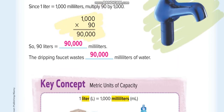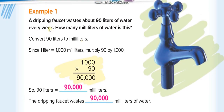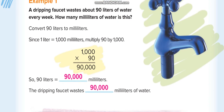First example: a dripping faucet wastes about 90 liters of water per week — that's too much. If you have dripping taps in your house, you have to fix it. To find how many milliliters this is, convert from liters to milliliters by multiplying by 1,000: 90 times 1,000 equals 90,000 milliliters.